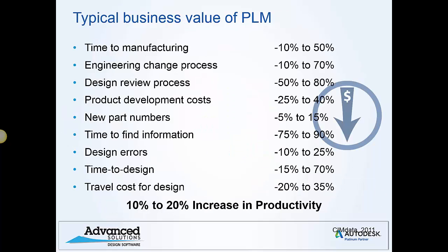Here are some figures from industry analyst CIMdata representing the value of PLM to manufacturing organizations they surveyed. You can see some significant metrics: up to 50% improvement in getting products to the manufacturing stage faster, engineering changes up to 70% faster, product development costs reduced by up to 40%, and a massive 75% to 90% reduction in time wasted looking for information. At the bottom you can see an expected 10 to 20% overall increase in productivity for the company.